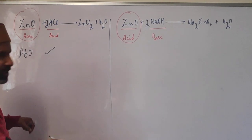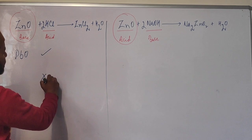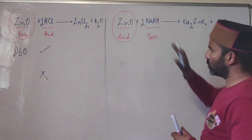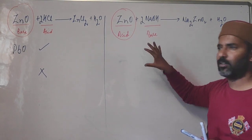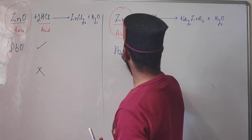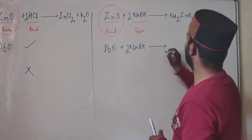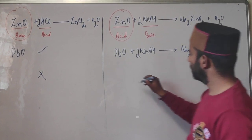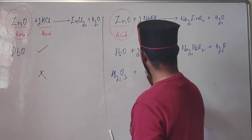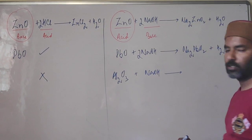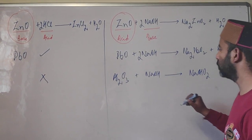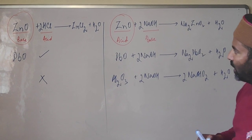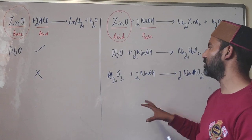Our main focus here is the action of alkali on amphoteric oxides. Lead oxide reacts with NaOH to form sodium plumbite. Aluminium oxide (alumina, Al2O3) reacts with NaOH to form sodium meta-aluminate NaAlO2 and water. So the oxides of zinc, lead, and aluminium are all amphoteric — they react with acids as well as bases.